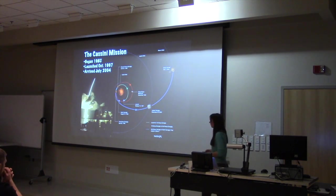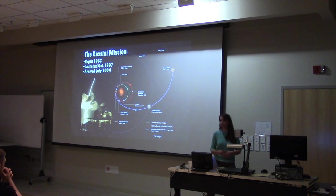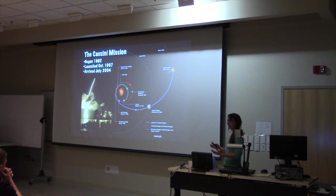The start of the Cassini mission actually began in 1982. There was a working group that met, international scientists, and that working group proposed a Saturn orbiter and a lander for Titan. I like this mission because it goes well with my life. That's actually the year I was born, 1982.